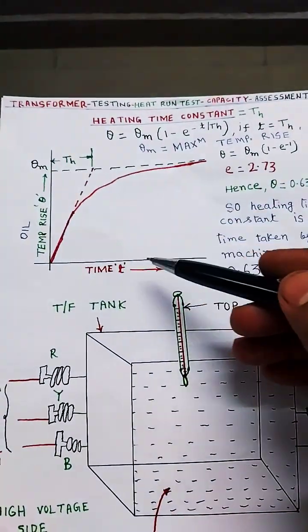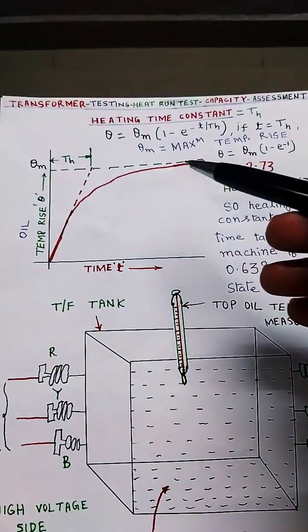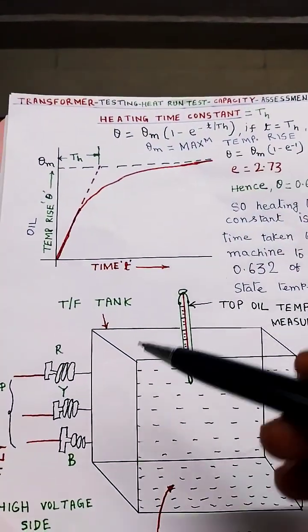Oil temperature rise versus time curve is the typical instrument available to assess the capacity of transformer.